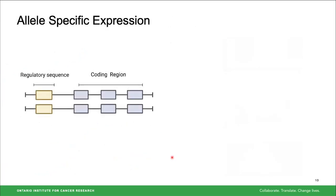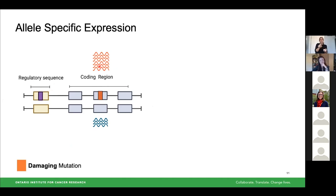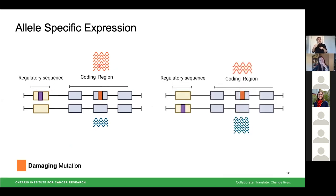One way we can investigate how selection is impacting gene expression and genetic regulation is through a process known as allele-specific expression, or ASE. This is where we have an unequal expression of an allele at a particular position, which can be caused by a cis-regulatory variant upstream. Depending on the haplotype this variant falls on, we could get either an overexpression or an underexpression of a damaging mutation.